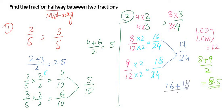16 plus 18 divided by 2 becomes 34. 34 divided by 2 gives you 17. So 17 over 24 is the halfway fraction between the two fractions, or midway fraction between the two fractions.